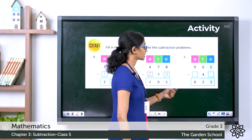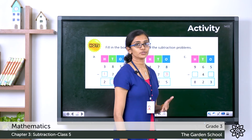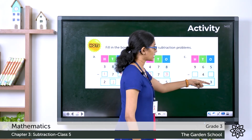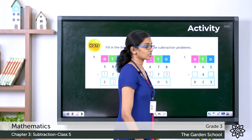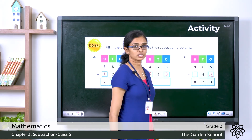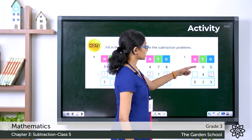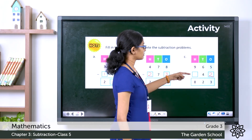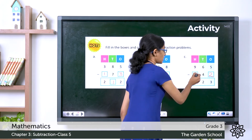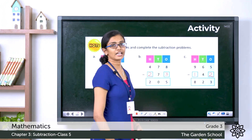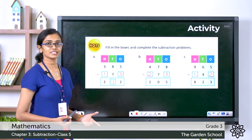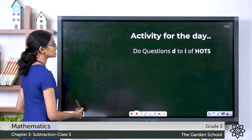Now the third one: 5 minus something gives you 3. You can also do 5 minus 3 to get the missing digit — it is 2, and 5 minus 2 is 3. Then 6 minus 4 is 2, and 9 minus what gives you 8? That is 9 minus 8, which is 1. So 9 minus 1 is 8. These are the correct missing digits. Hope your answers are correct.